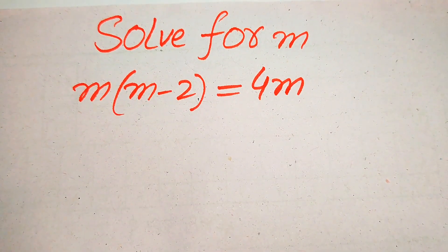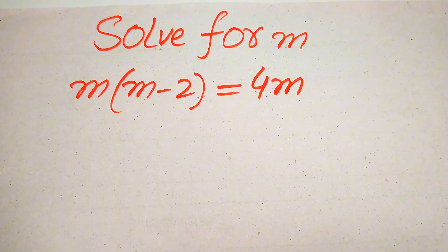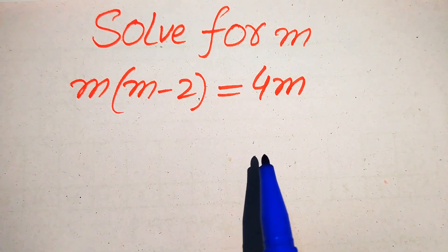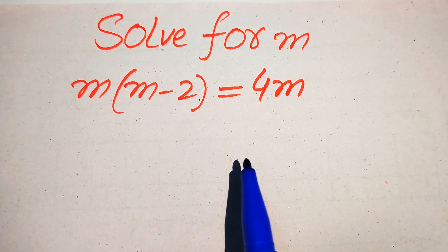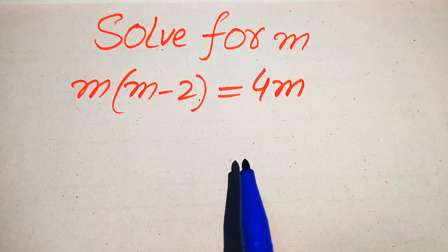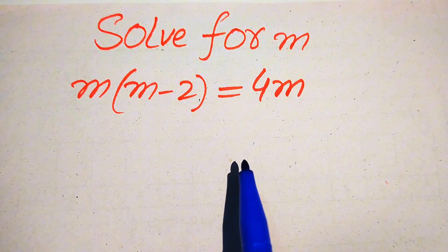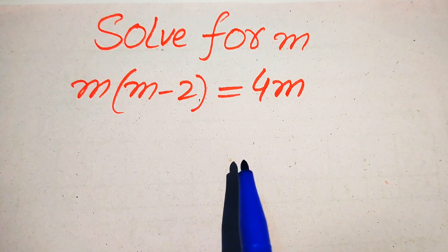Hello everyone. How to solve this problem for the values of m if we have m times of m minus 2 equals to 4m, and we solve this problem for all the values of m. First, we find all the roots of this equation, and at the last we will verify which of the roots are solutions and which are extraneous roots.